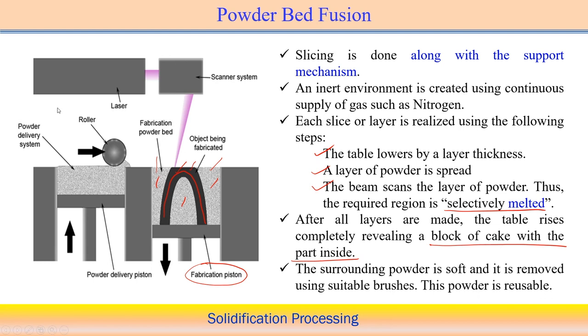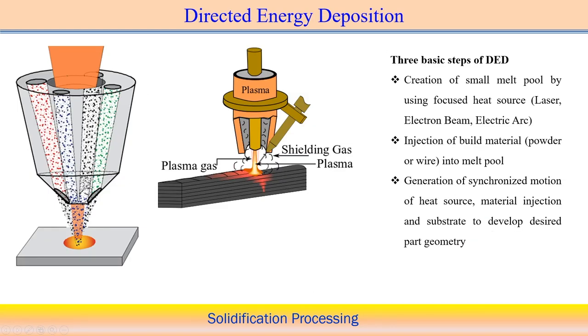Now, the second type of additive manufacturing is called directed energy deposition (DED). In this case, powder is projected directly onto the work piece while the laser source simultaneously melts and deposits it on the substrate. Therefore, it is not necessary to stack powder over a bed — that step can be eliminated. There is no need for extra powder to support the structure.